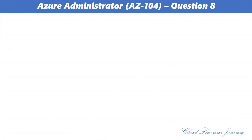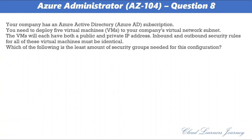Question number 8. Your company has an Azure Active Directory subscription. You need to deploy 5 virtual machines to your company's virtual network subnet. The VMs will each have both a public and private IP address. Inbound and outbound security rules for all these virtual machines must be identical. What is the least amount of security groups needed for this configuration? The options are: a) 4, b) 3, c) 2, d) 1. The correct answer is d, 1. We can have a single NSG (network security group) attached to that single subnet under which all 5 VMs exist, with common inbound and outbound rules.